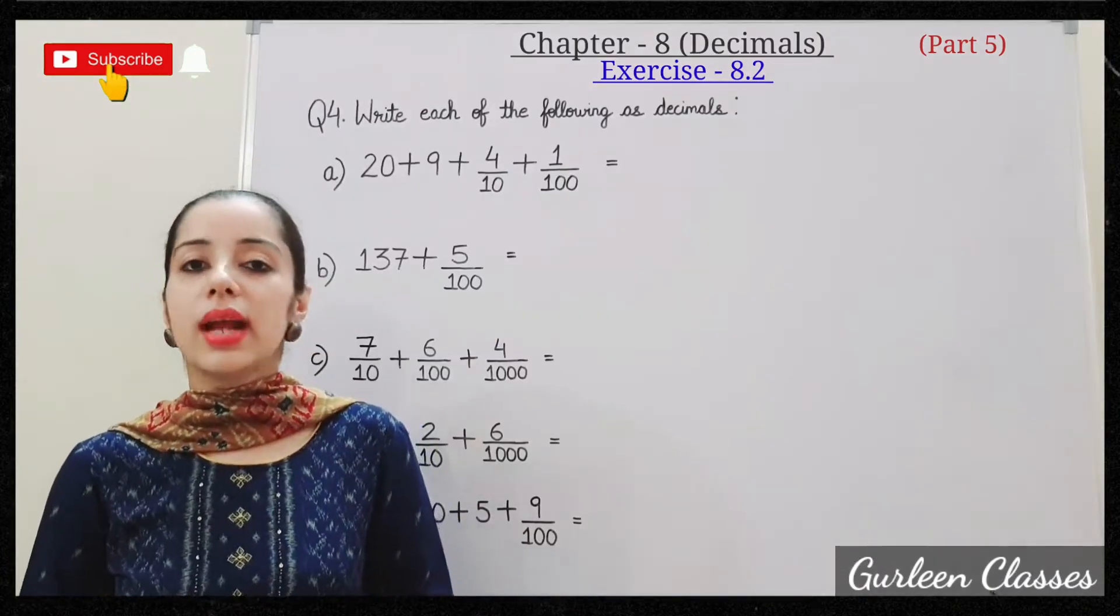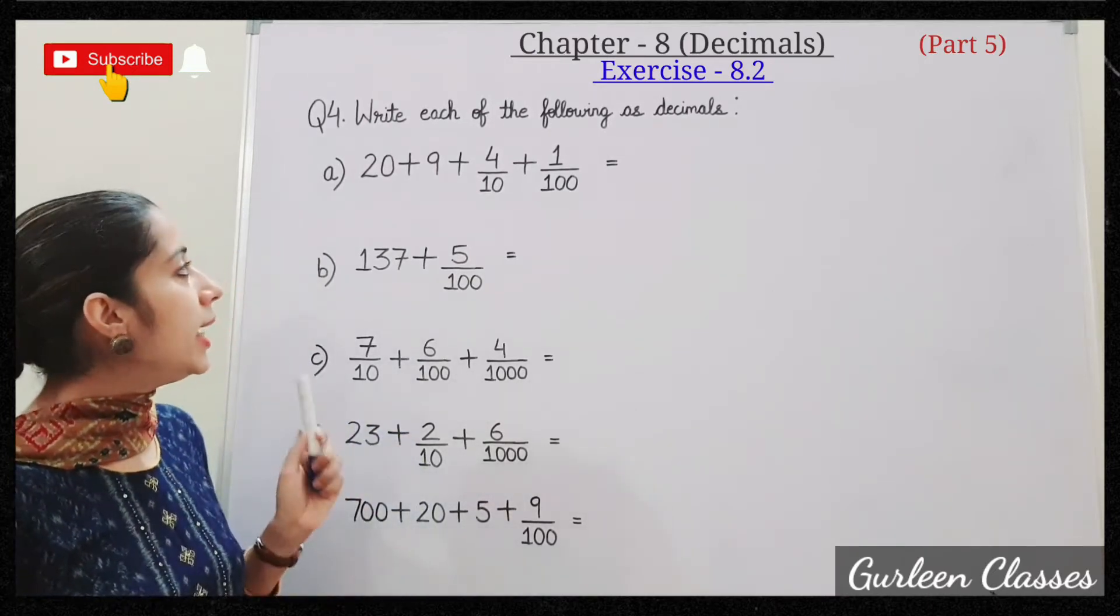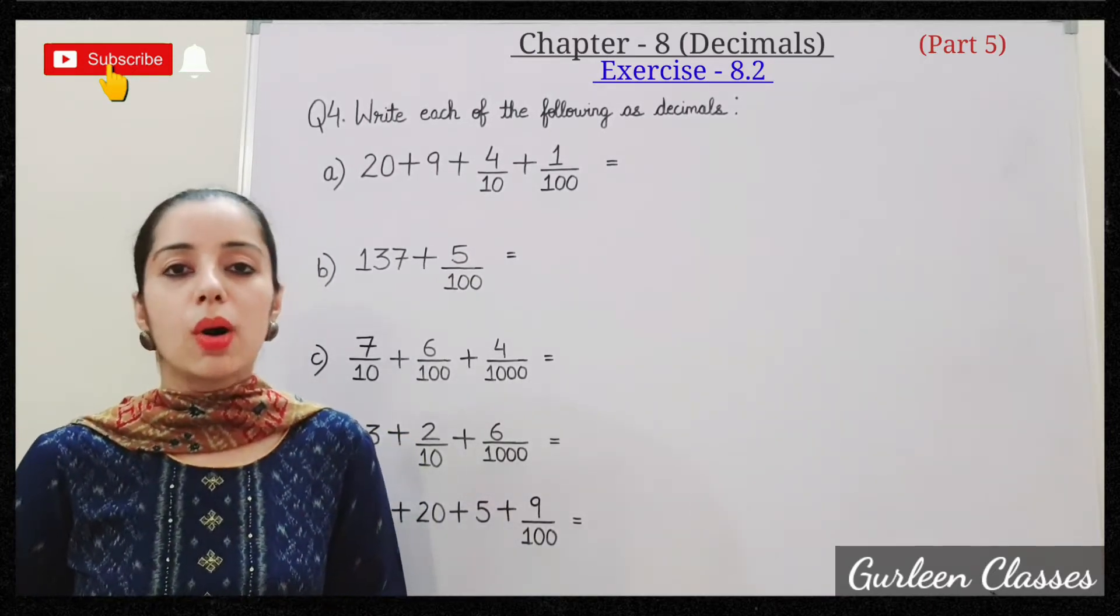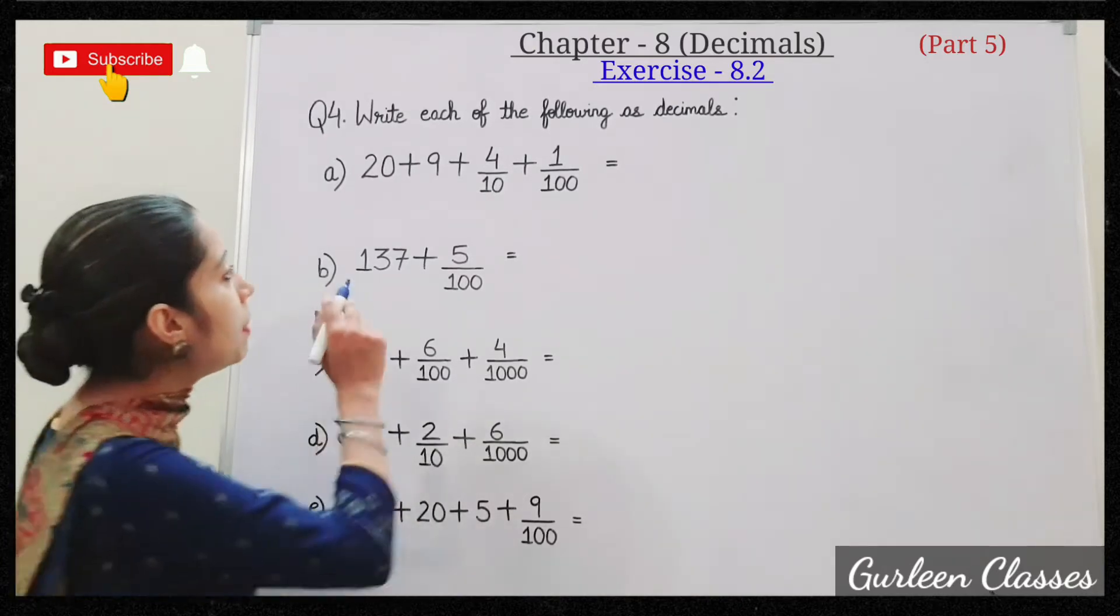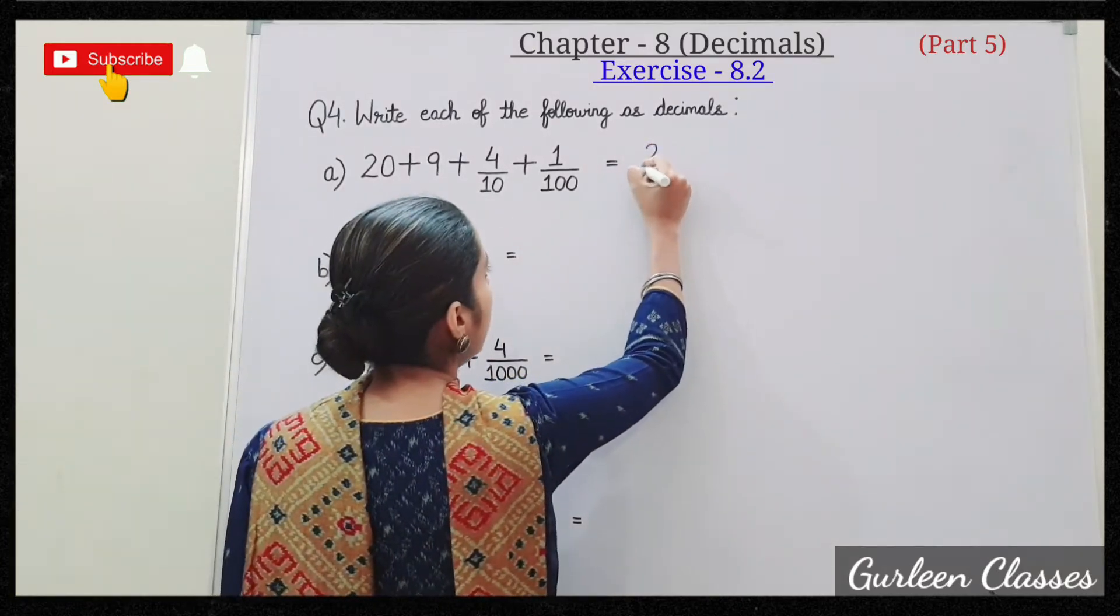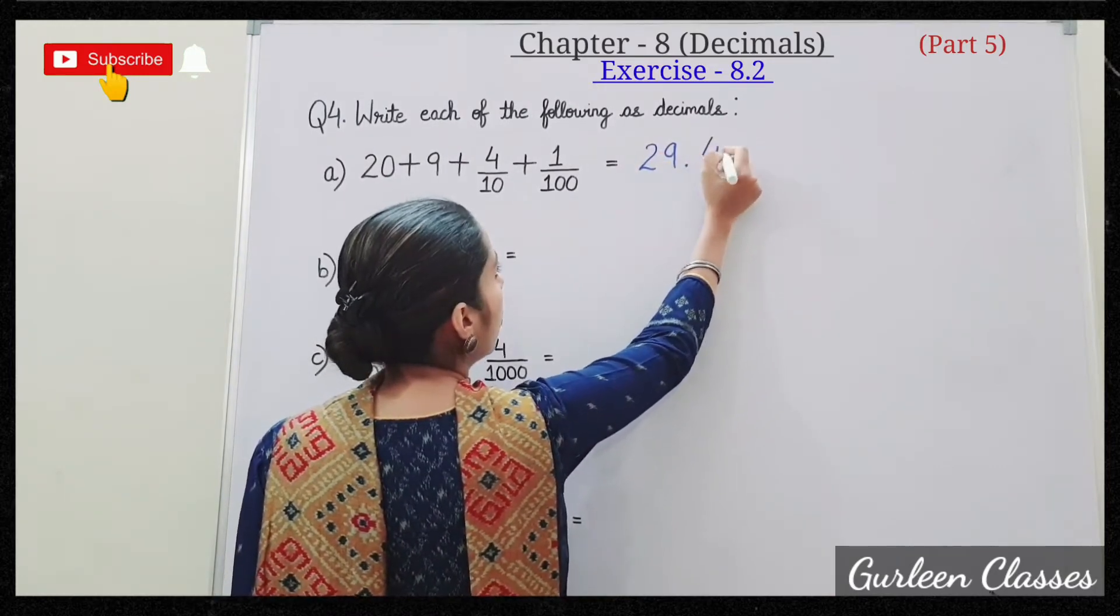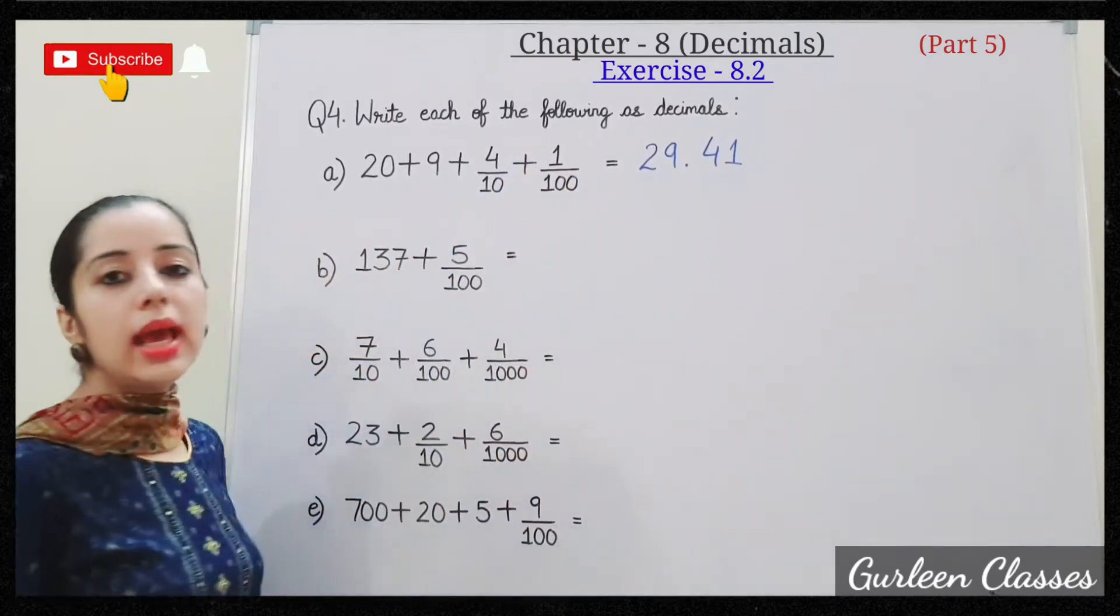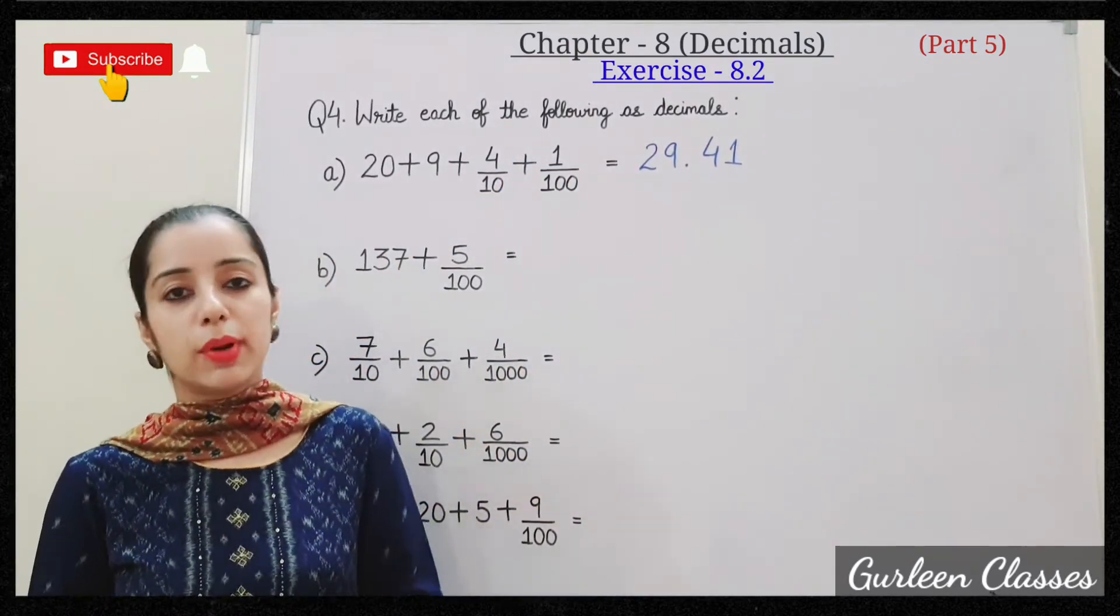Question number 4: write each of the following as decimals. A: 20 plus 9 plus 4 upon 10 plus 1 upon 100. So 20 plus 9, that is 29.41. As 4 upon 10 and 1 upon 100 is the decimal part, so it will be after decimal point.